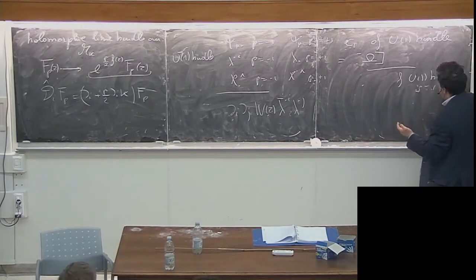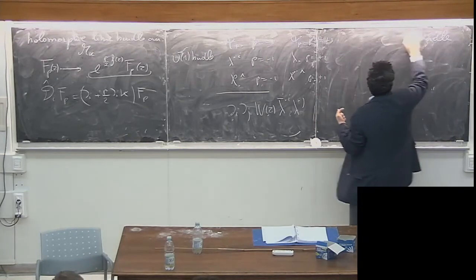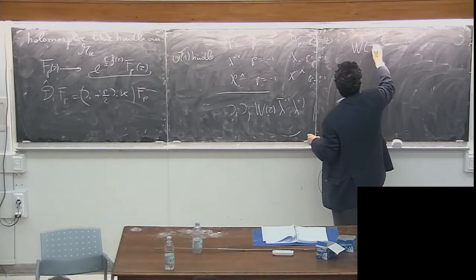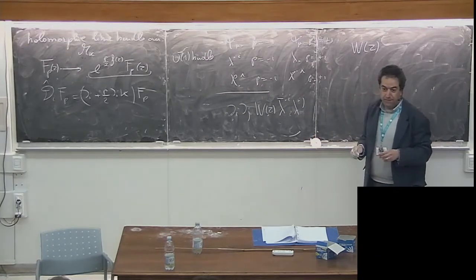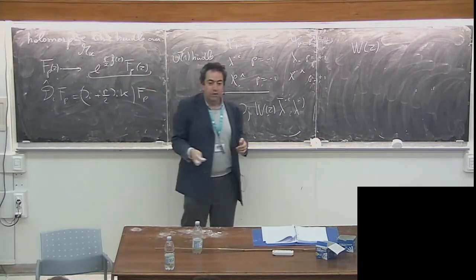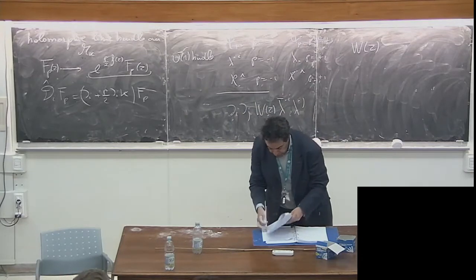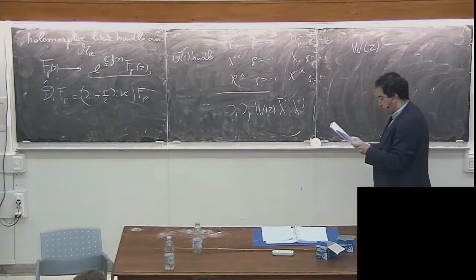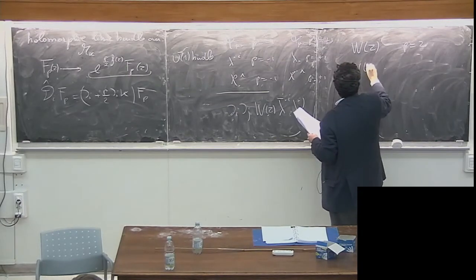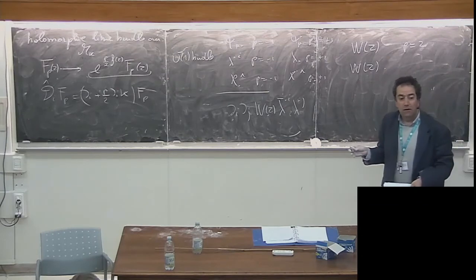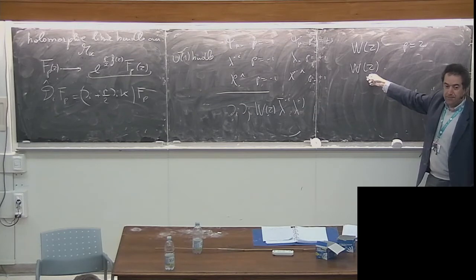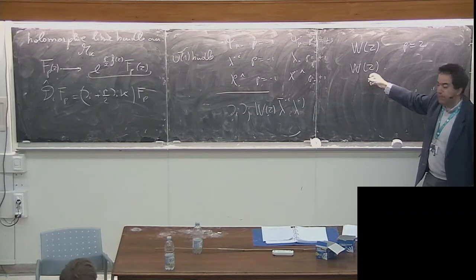The superpotential is holomorphic and is a section of the holomorphic line bundle with weight P = 2. This means that in supergravity we associate a transformation property also to W, the superpotential: W transforms as e^{F(z)} W(z).